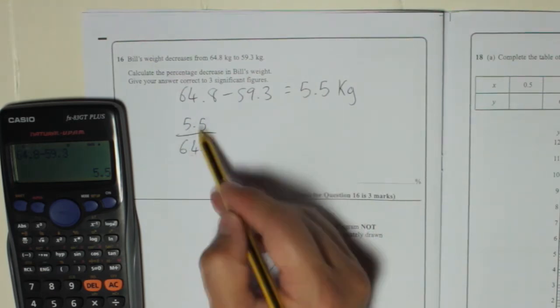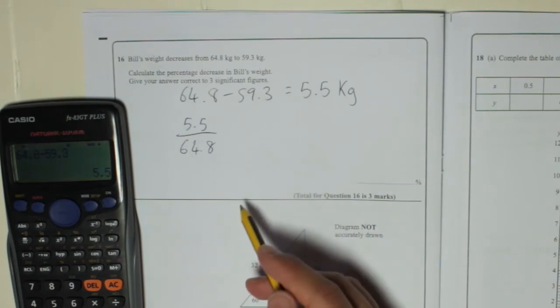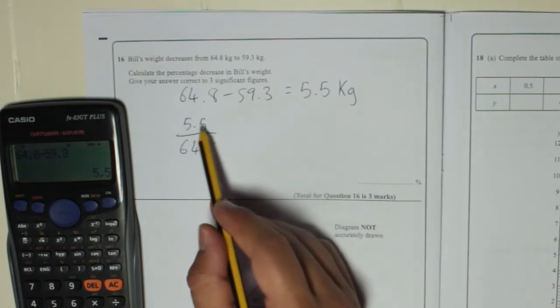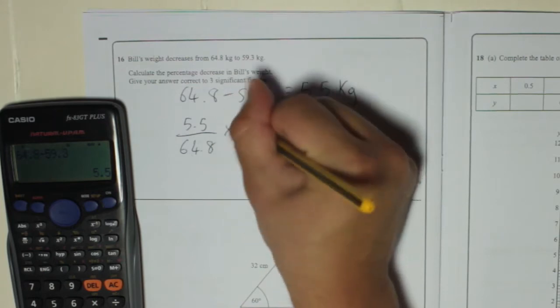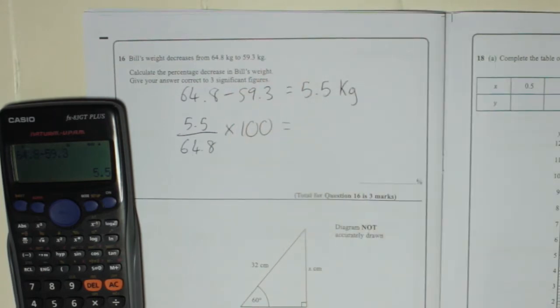To turn a fraction into a percentage, which is what the question is asking for, you do the amount he lost divided by his original weight. So the top divided by the bottom of the fraction. That will give it you as a decimal and then we're going to times it by 100 to put it into a percentage.